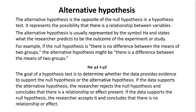the alternative hypothesis might be there is a difference between the means of two groups. HA is: μ1 is not equal to μ2. The goal of a hypothesis test is to determine whether the data provides evidence to support the null hypothesis or the alternative hypothesis.